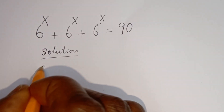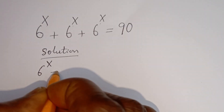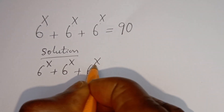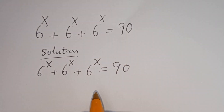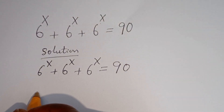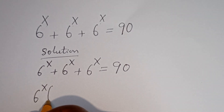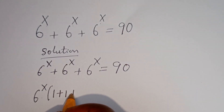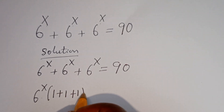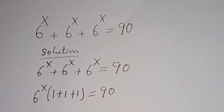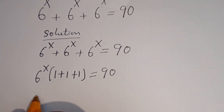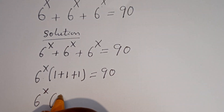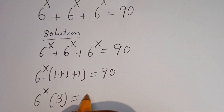We have 6 to the power of x plus 6 to the power of x plus 6 to the power of x is equal to 90. Since 6 to the power of x is common, let's bring it out. We have 6 to the power of x times (1 plus 1 plus 1), which equals 3, is equal to 90.